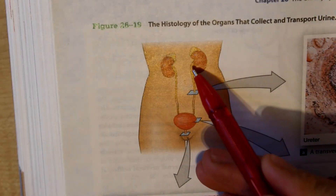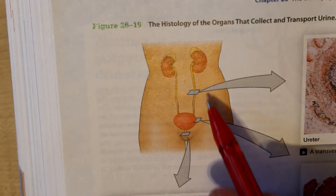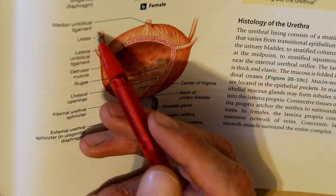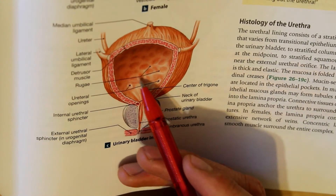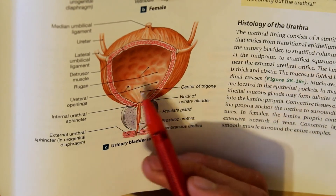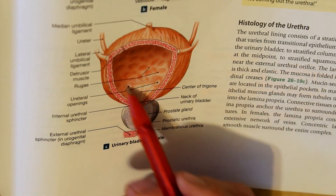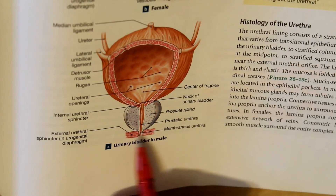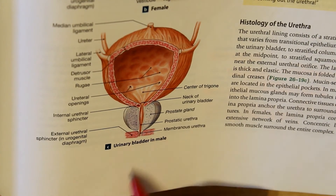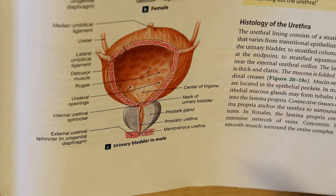Urine travels from the kidneys down to the bladder along the ureters. The ureters fill the bladder with urine, which is highly elastic and can hold large volumes. When the sphincter muscle relaxes, urine gets released through the urethra.